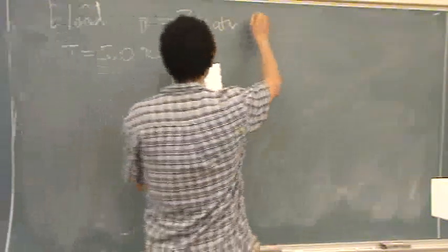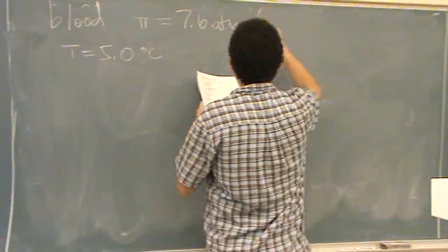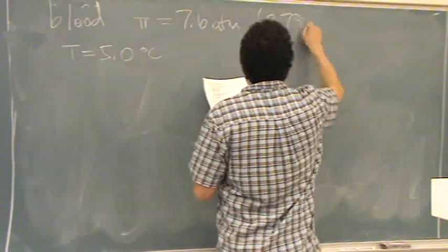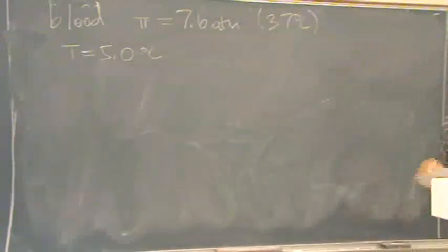This osmotic pressure of 7.6 atmospheres occurs at 37 degrees Celsius. That's for regular blood. Now we're at a different temperature.